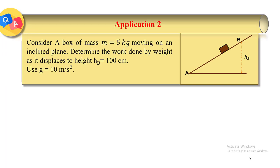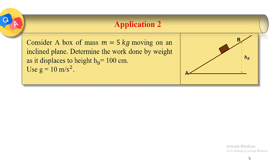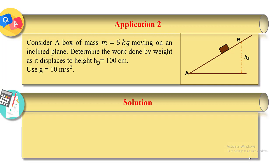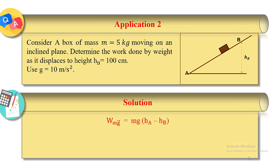Let's solve application two. We have a box that is displaced from A to B along an inclined plane. We have to determine the work done by the weight, knowing that the mass of the box is 5 kg and the height of point B is 100 cm. We apply the formula: W_weight = mg(H_A − H_B). Substituting: mass = 5 kg, g = 10, H_A = 0, H_B = 100 cm = 1 m. The work done by the weight is equal to −50 Joules, which is less than zero. In this case, the work done by the weight is resistive.